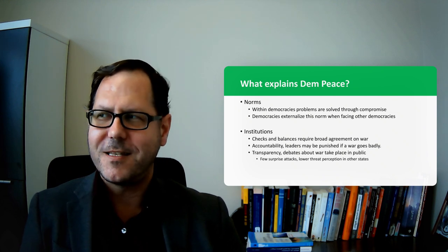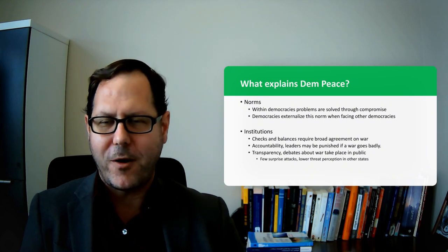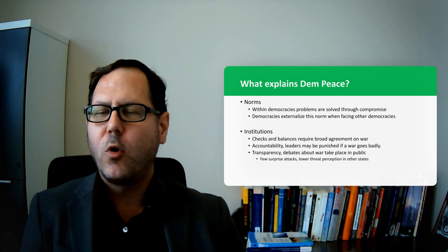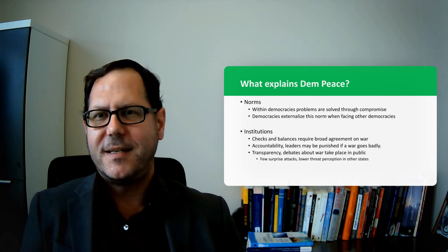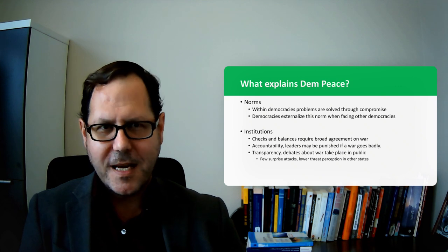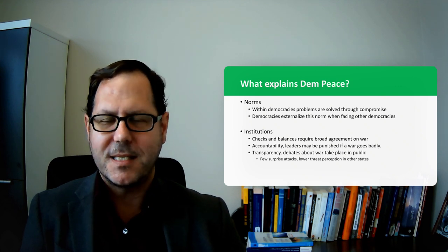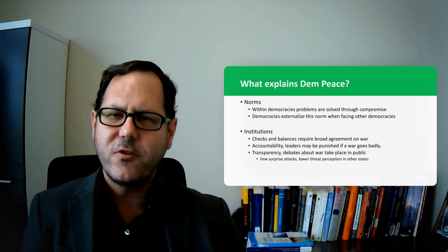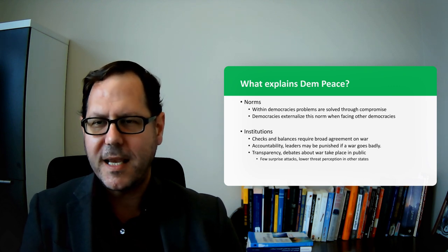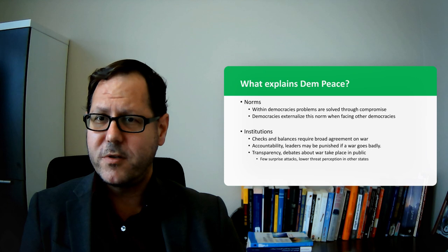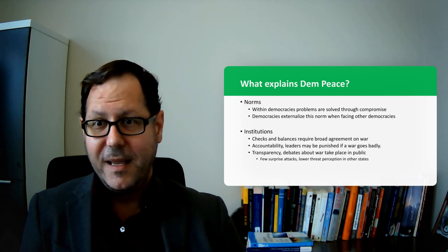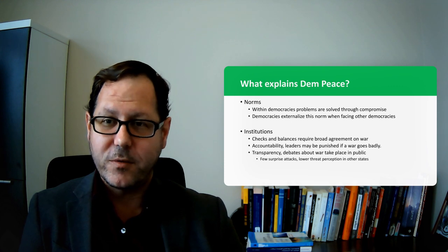We have lots of evidence that democracies tend to do better in terms of foreign policy decision making, they tend to be more likely to win the wars that they fight, they tend to be more selective in choosing their conflicts, they tend to fight in a way that minimizes their own casualties. So there's lots of things to be said about democracies and the conduct of foreign policy, but the idea that leaders of democracies are thinking, if I start this war and this war goes badly, I'm toast. I just don't see it.